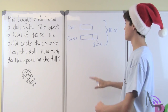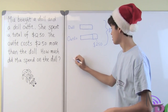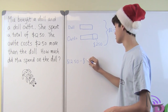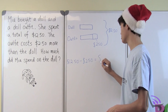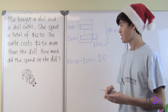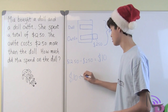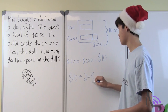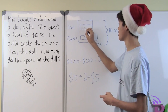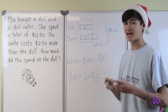First, we find how much just the two equivalent blocks cost by taking $2.50 and subtracting it from $12.50. $12.50 minus $2.50 gives us $10. If these two bars cost $10 and they are equivalent, then each bar represents $5. Since the doll is just one bar, the answer is: Mia spent $5 on the doll.